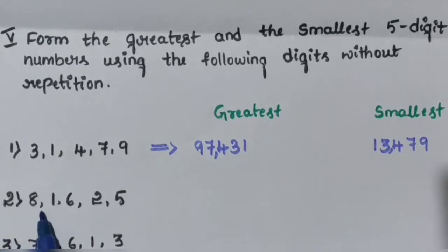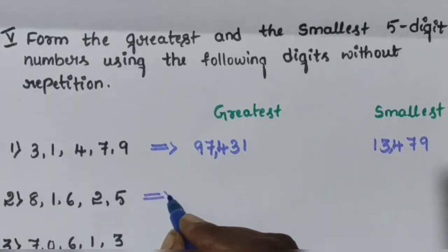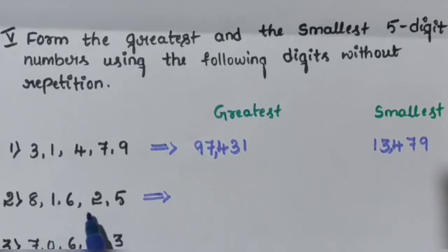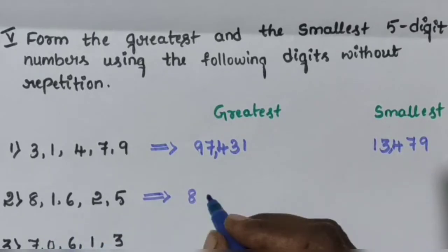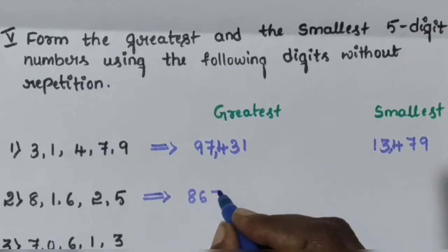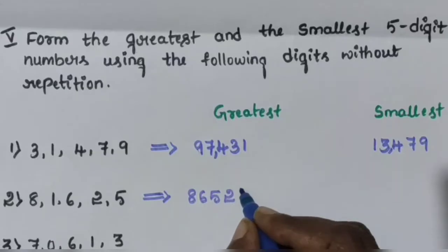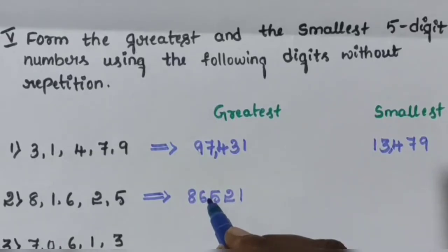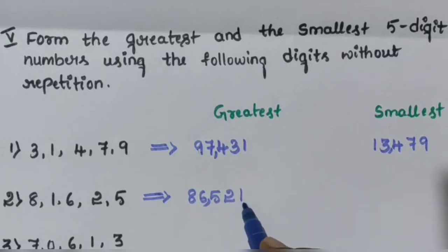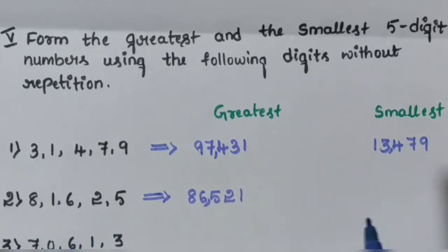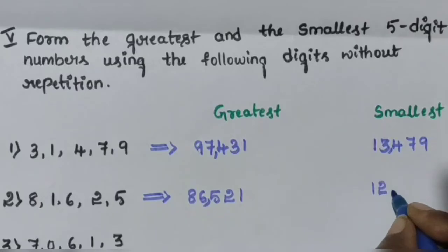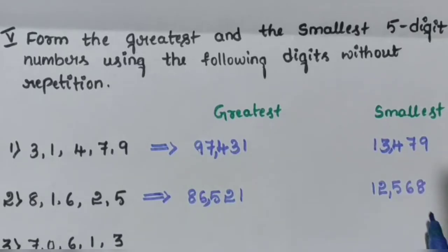Question number 2 — digits are 8, 1, 6, 2, 5. Write the greatest 5-digit number: 8, 6, 5, 2, 1 — so 86,521 is the greatest 5-digit number. For the smallest: 1, 2, 5, 6, 8 — so 12,568 is the smallest number.